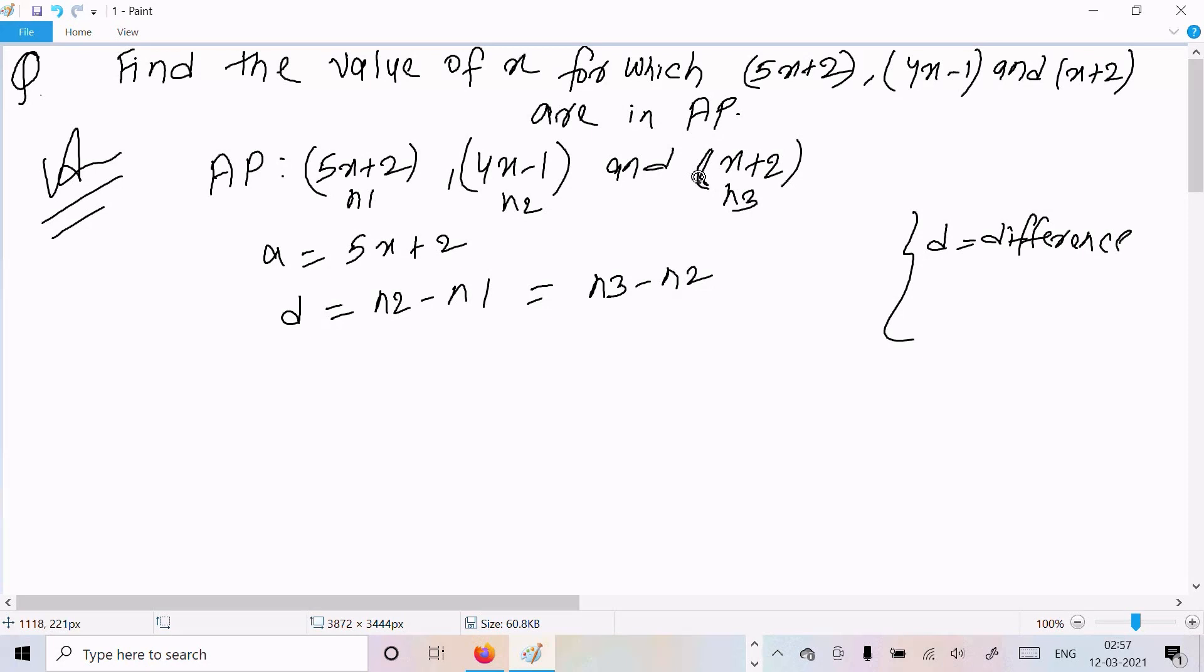So the third term is there. Now we can write n2 minus n1 equal to n3 minus n2. So n2 value is 4x minus 1 and minus n1 value is 5x plus 2. n3 value is x plus 2 and n2 value is minus 4x minus 1.